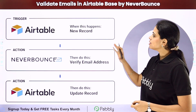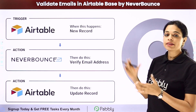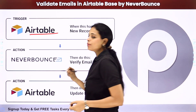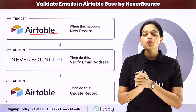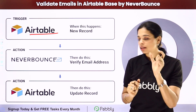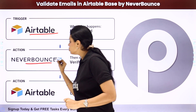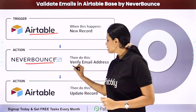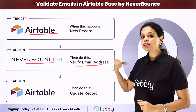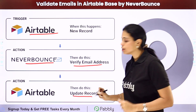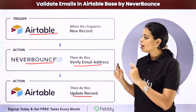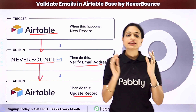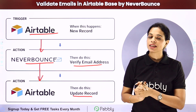In this video, we are going to see how to validate emails in an Airtable base using Neverbounce. So let's say you have certain data in your Airtable spreadsheet — like a name and email — and you want to validate that email. Neverbounce is an email verification tool. Once you have verified, you can update your spreadsheet with the validation status. To do this, you need to set up an integration between the two applications, and that can be done using Pabbly Connect software.